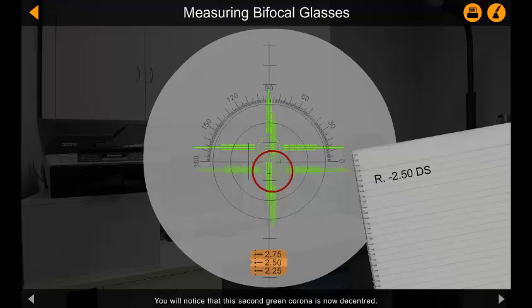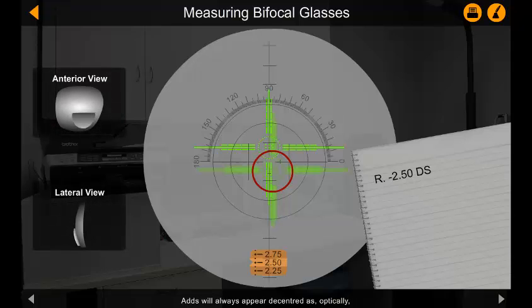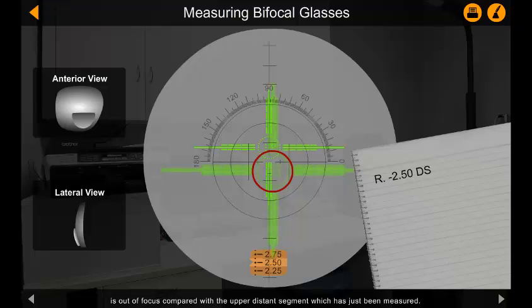You will notice that this second green corona is now decentered. Adds will always appear decentered as optically they are not centered on the lens. This is acceptable. You will also notice that the lower corona is blurred. This is because the add, or lower segment of the bifocal lens, is out of focus compared with the upper distant segment which has just been measured.